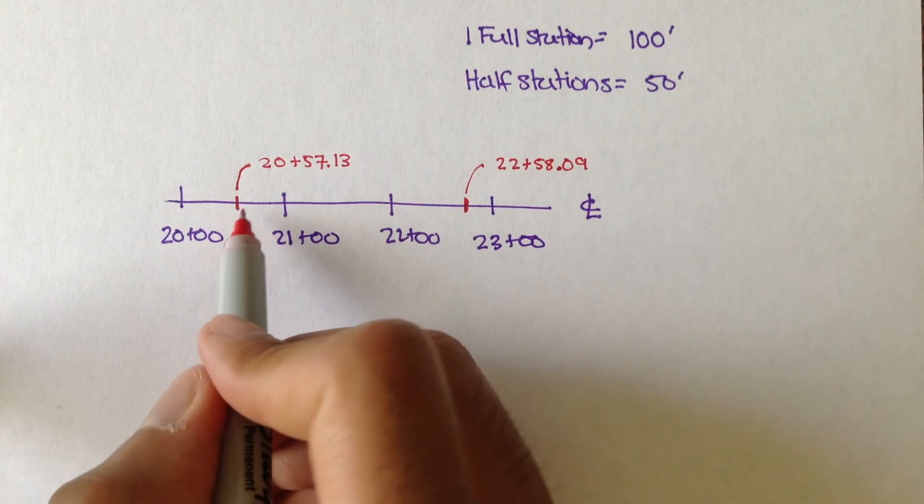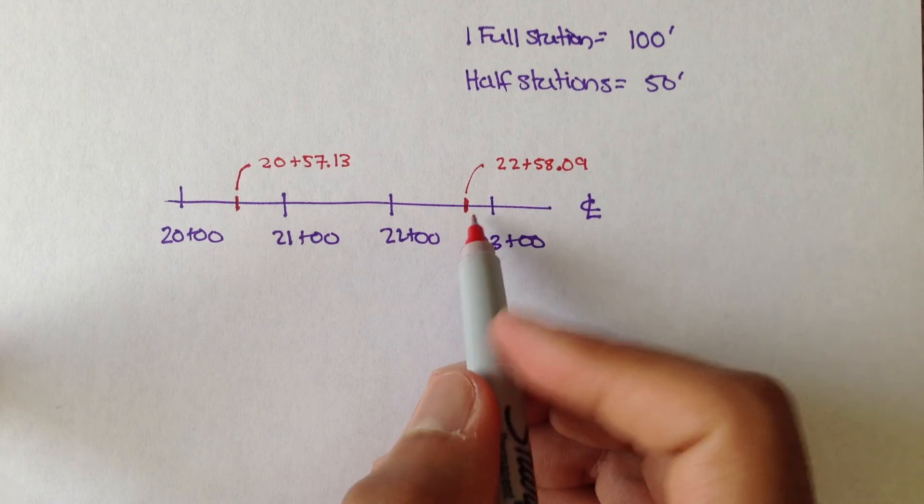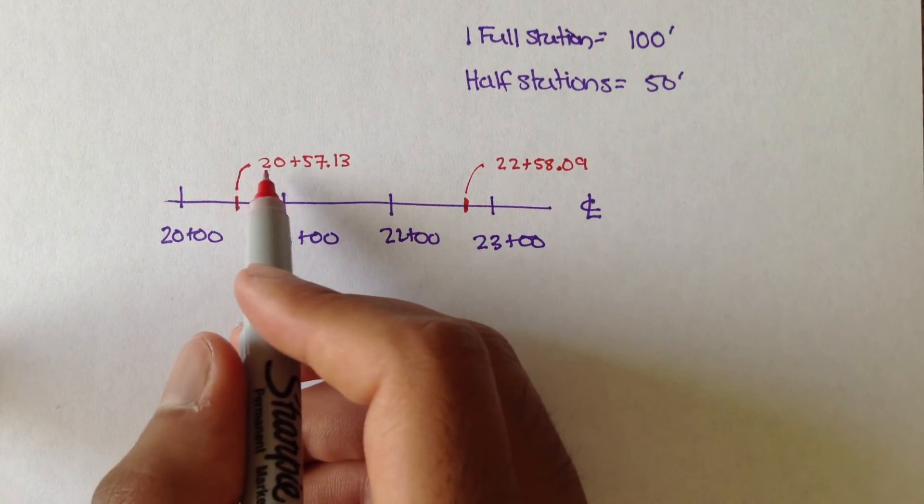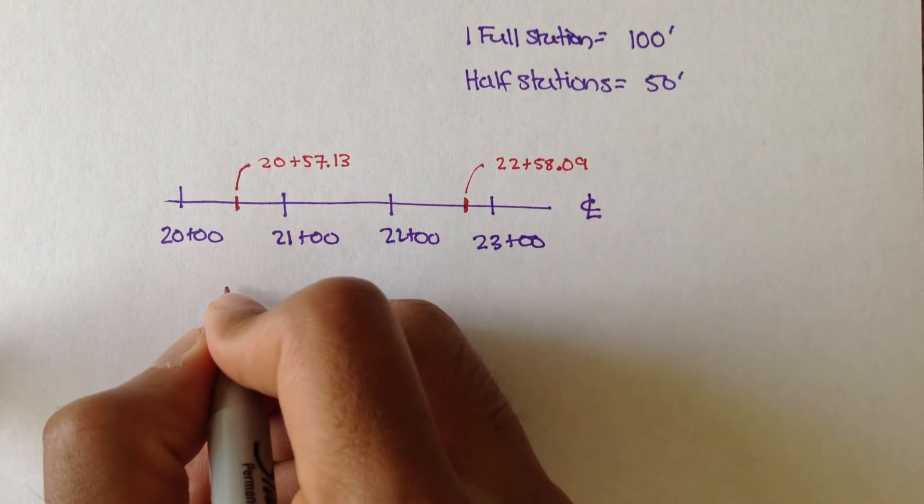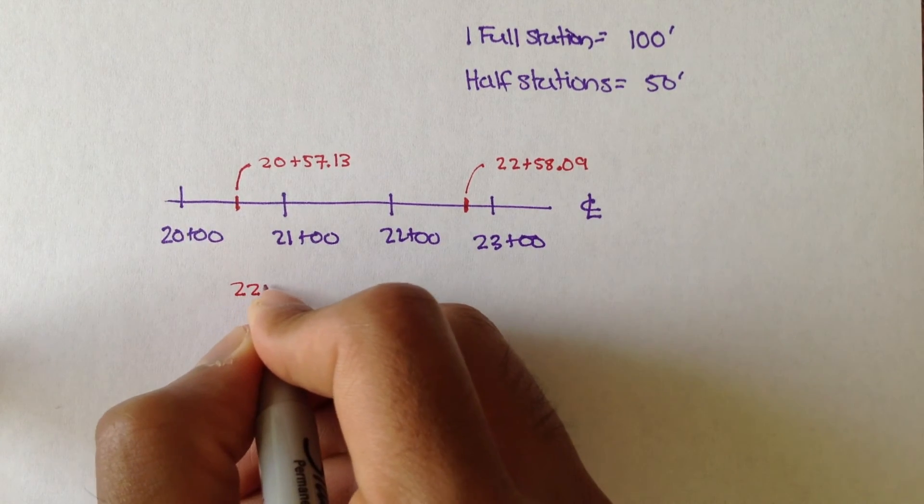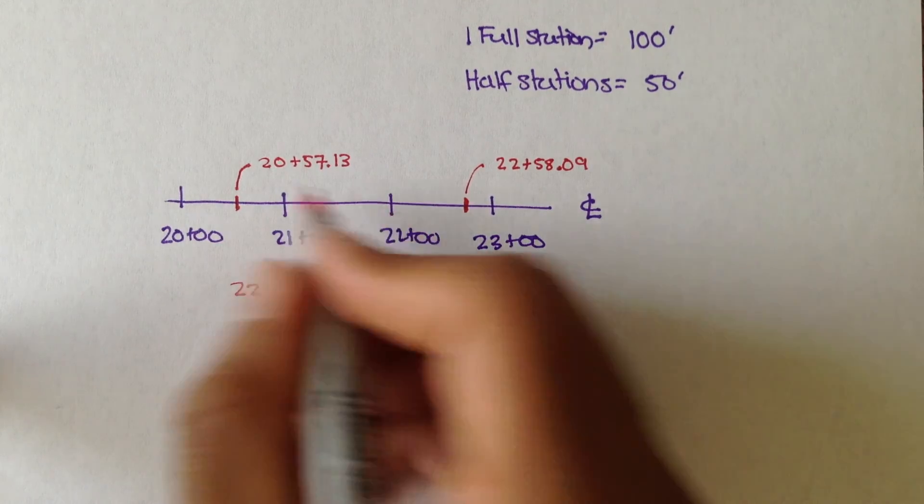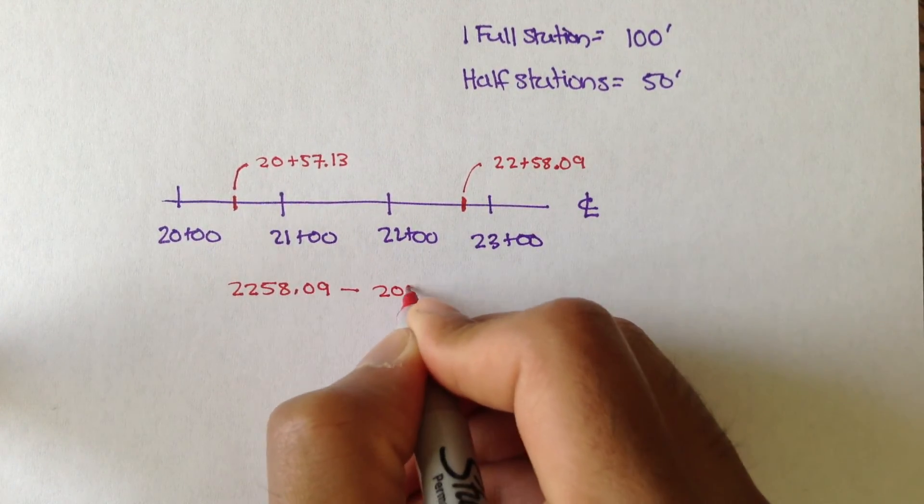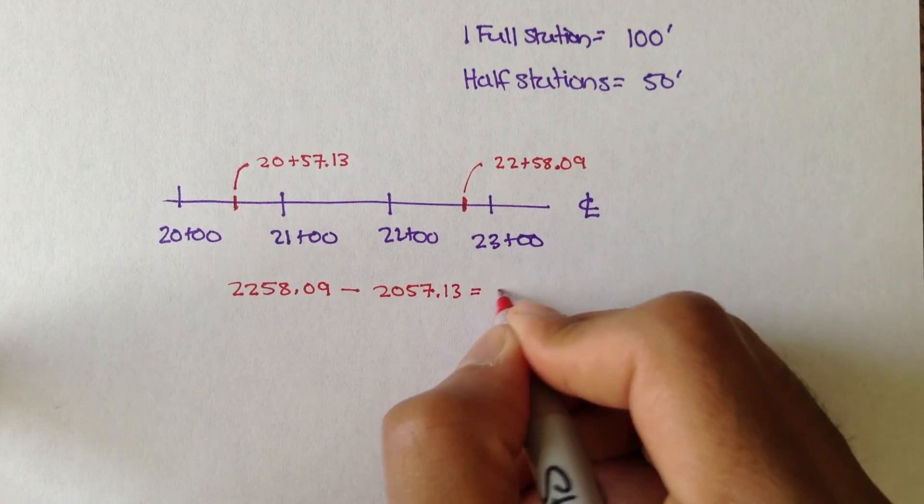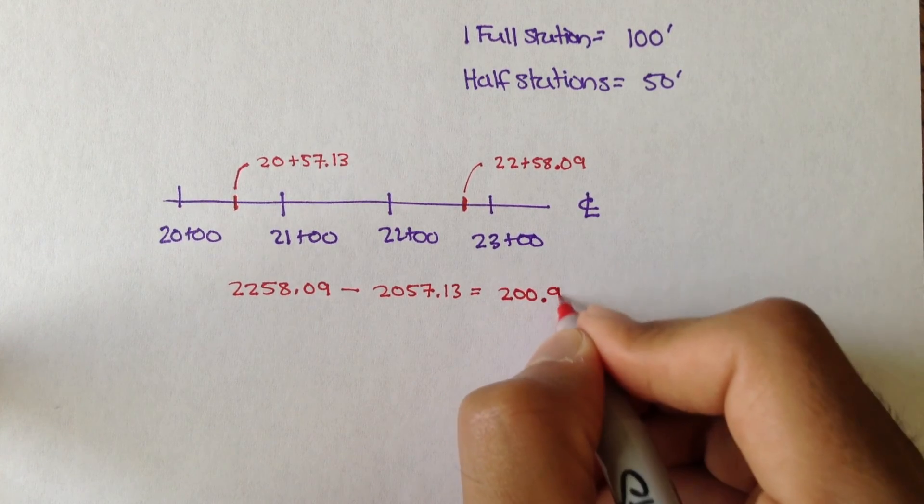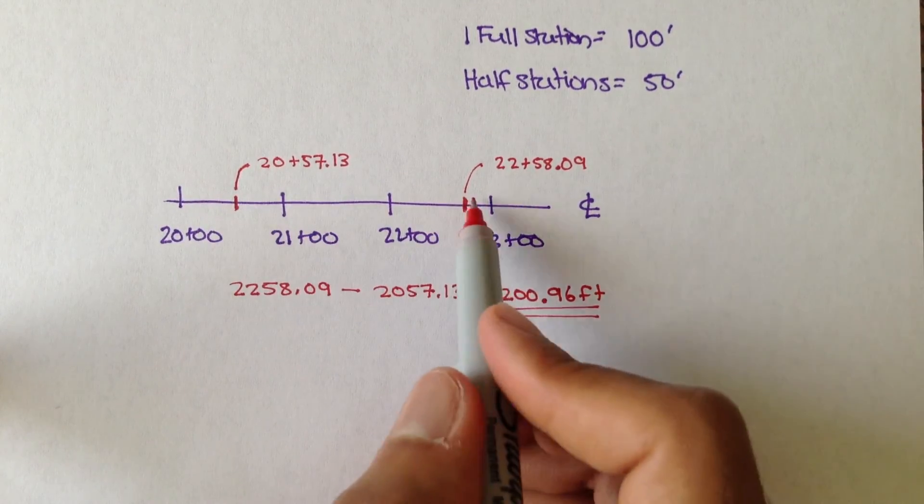To find the distance from this station to this red station, all we do is take the higher station, subtract the lower station from it, and we get our distance. And remember, 22 plus 58.09 is just another way of writing 2258.09. Minus this station, which is 2057.13. We subtract those two numbers and we get 200.96 feet. That's the distance from this station to this station.